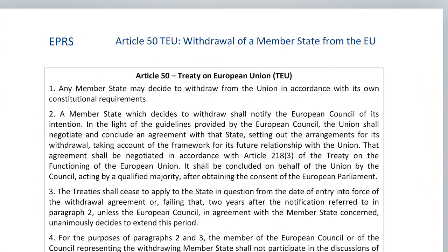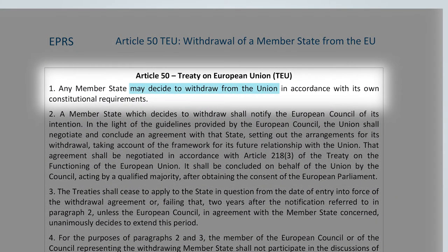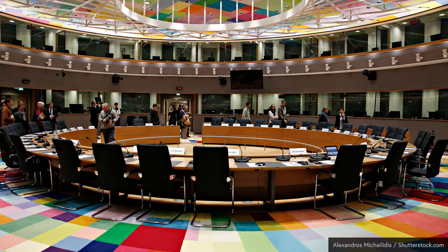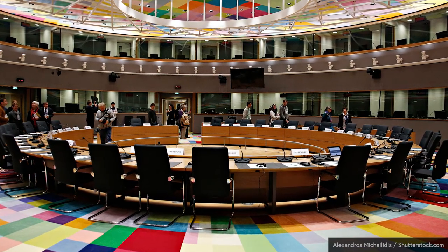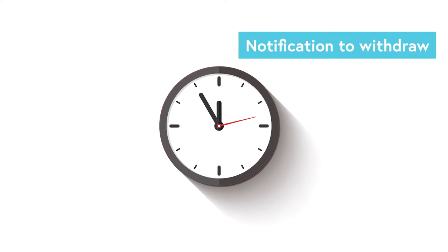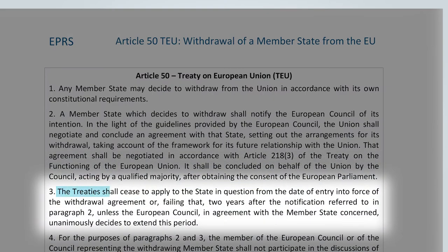Article 50 confirms that a member state of the European Union can withdraw from the EU on the basis of its own constitutional requirements. The starting point of the withdrawal process is the formal notification of withdrawal that the interested member state must make to the European Council, the institution bringing together heads of states and governments of all the member states. After the notification of the intention to withdraw has been made, the clock starts ticking. According to Article 50 TEU, the withdrawing member state has two years to negotiate a withdrawal deal with the European Union.